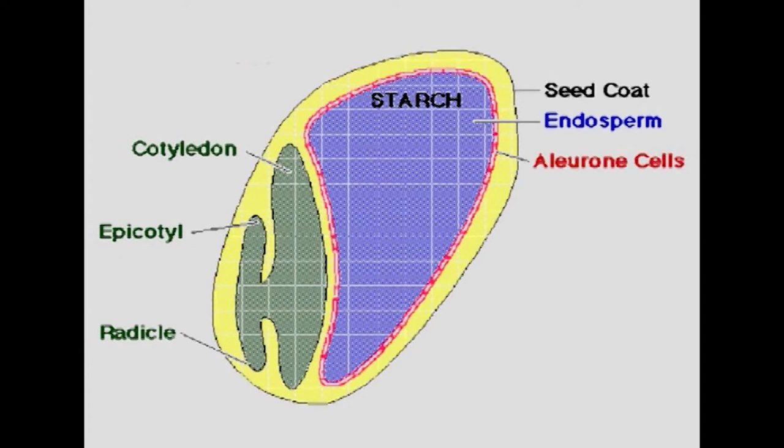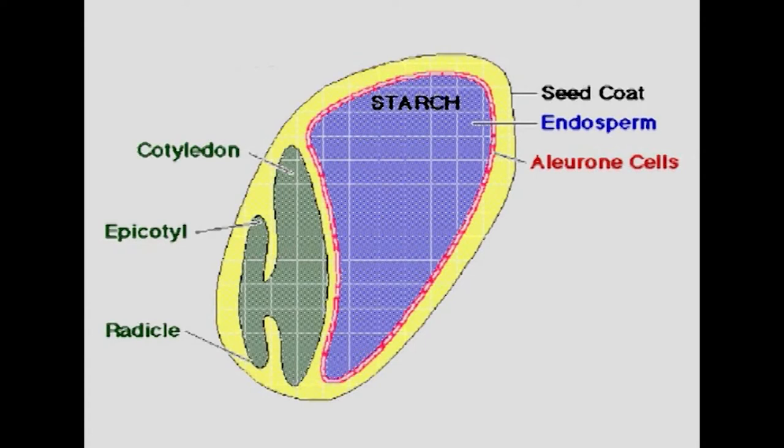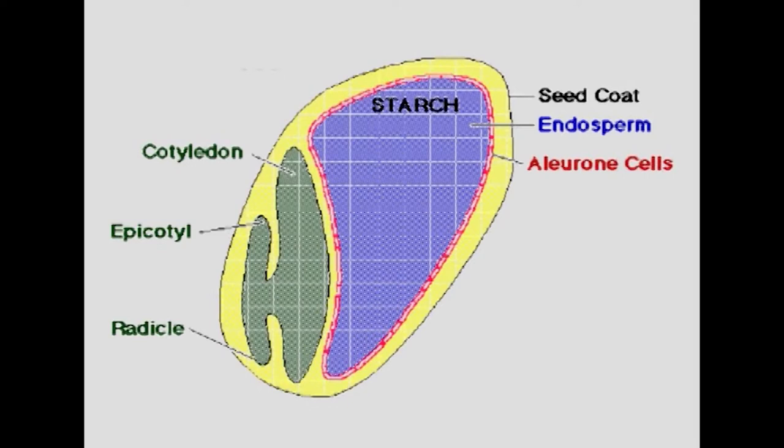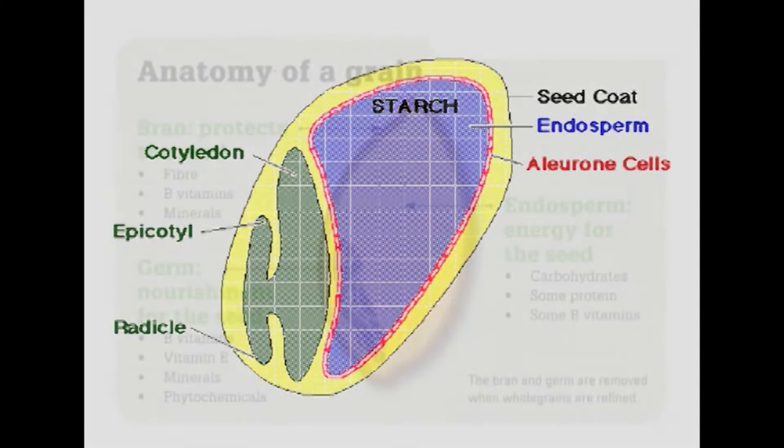Next to the epidermis is the hypoderm of varying thickness. The seed coat or testa is a thin single or double layer. The inner layer of testa of wheat is often deeply pigmented, which gives the grain its characteristic colour. Next to the testa is the aleurone cell layer, one of the most important layers nutritionally.